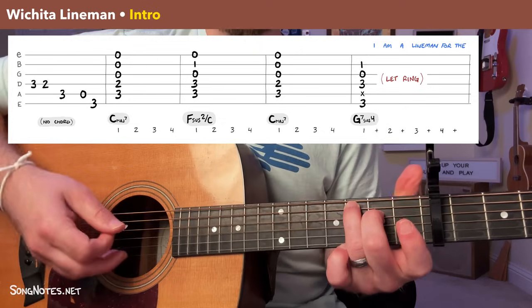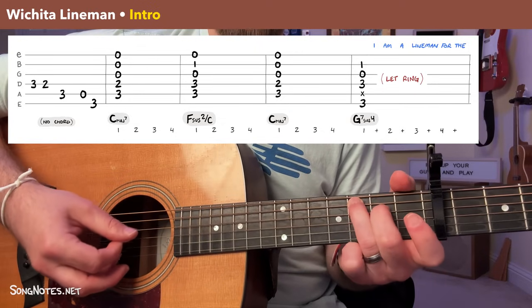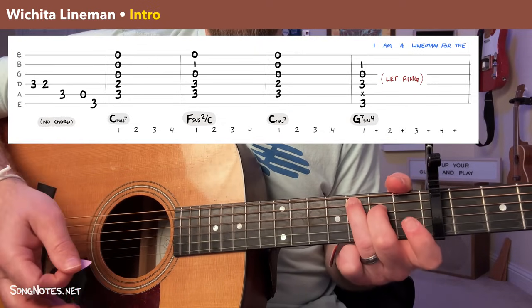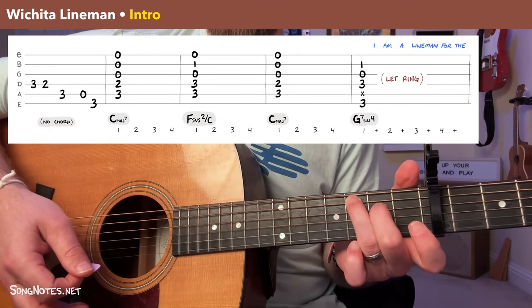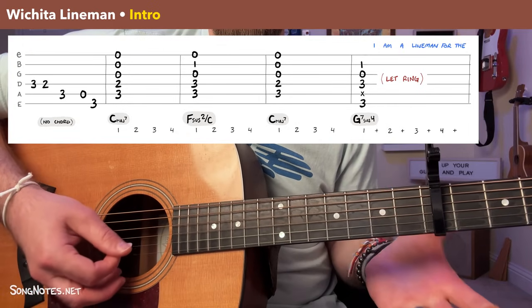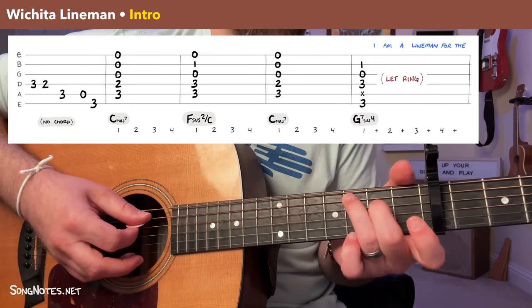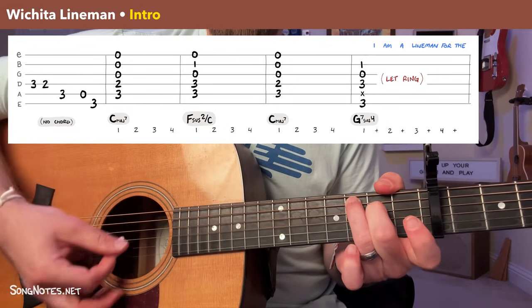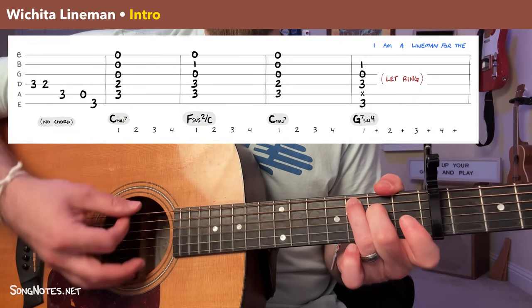And I recommend when you're practicing this, end that riff by going directly into this C major seven chord. That's what we're going to do anyway. And when you play the riff, you want to sort of transition into that chord really smoothly and confidently. So practice that chord as part of the riff.